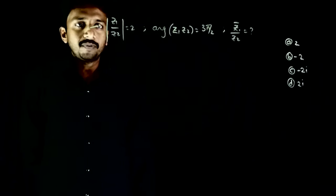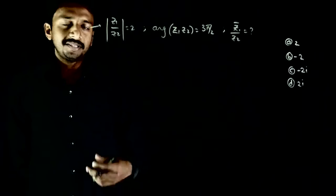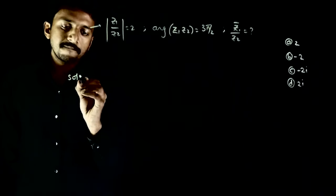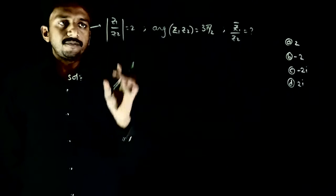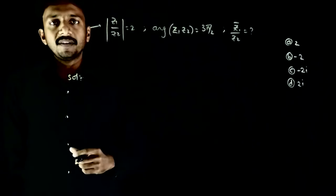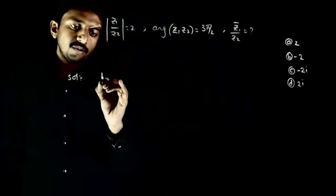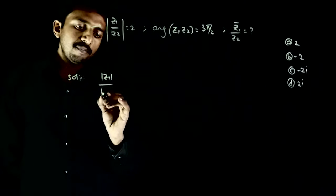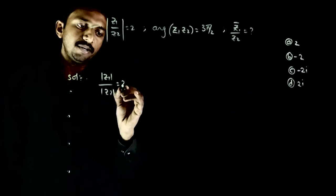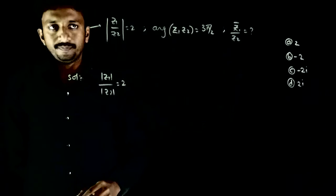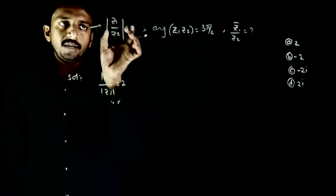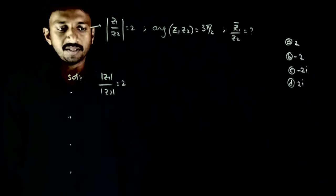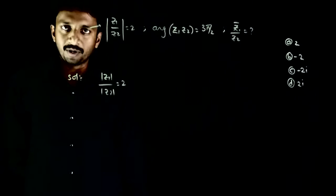It's a very simple question based on standard analysis. First, modulus of z1 by z2 is equal to 2, so mod z1 by mod z2 is equal to 2. Because we know that mod(z1/z2) equals mod z1 by mod z2 — this is from properties of modulus.